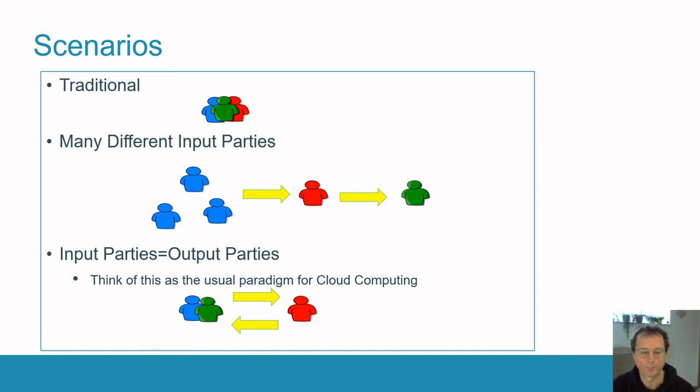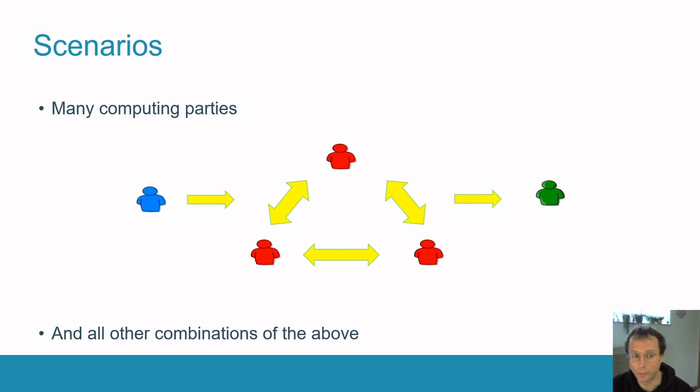If we have multiple computing parties, maybe the guy here wants to outsource his data, and he sends it to a cloud where he splits the trust between the cloud, with one being Microsoft, one being Google, and one being Amazon. He doesn't trust all of them, but he thinks that one of them is going to be okay. Then he can send his data to the cloud. They can engage in an MPC protocol, which then gives the output to someone else. And that someone else could actually be the original inputting party, or could actually be one of the computing parties, or whatever. So there are all sorts of ways you can change this topology.